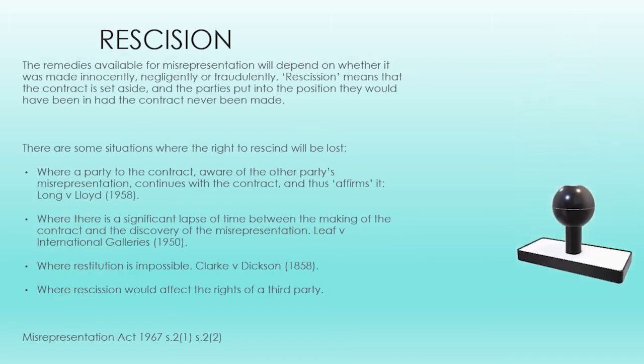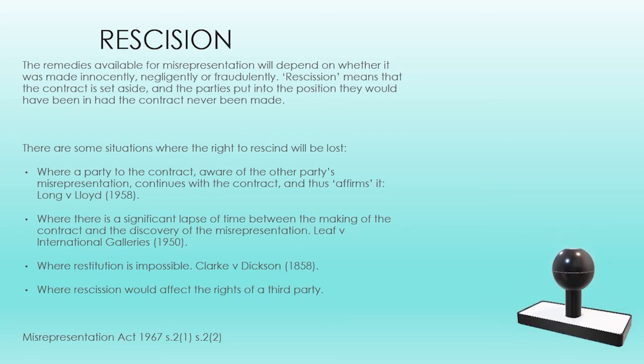The remedies available for misrepresentation will depend on whether it was made innocently, negligently or fraudulently. There are potential remedies available under the common law, both in contract and tort, and under the statute — the Misrepresentation Act of 1967. The main categories of remedy are, first, rescission of the contract, and secondly, damages for losses resulting from the misrepresentation. Rescission is the principal common law remedy for misrepresentation which induced a contract, and is still available whether the representation was innocent, negligent or fraudulent. Rescission means that the contract is set aside and the parties are put in a position where they would have been if the contract had never been made.